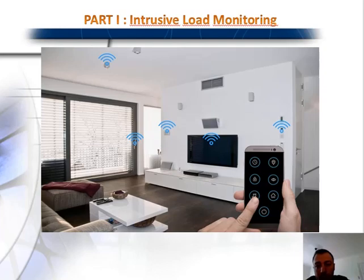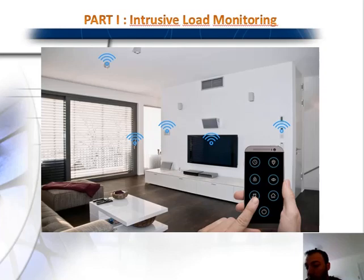We can divide load monitoring techniques into two types. The first is intrusive load monitoring, which means we need to enter the house and allocate one sensor for each appliance. So the television, washing machine, and dishwasher each have their own sensor. In this way we can achieve high accuracy and remotely monitor and control them easily. However, since we use many sensors, it is a high-cost system.